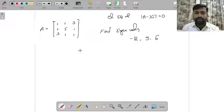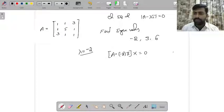And next, you need to find the corresponding eigenvectors. First, you start with lambda equal to negative 2. Then you solve this linear system A minus of minus 2 times identity multiplied with x equal to 0. You are solving A minus lambda I into x equal to 0.